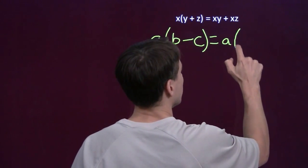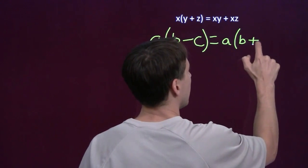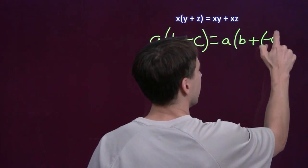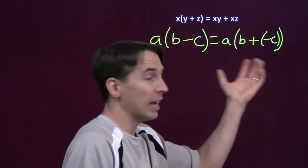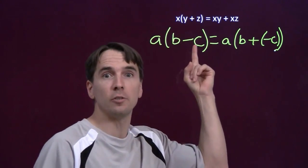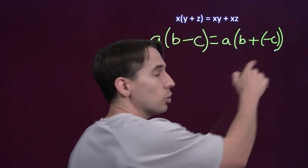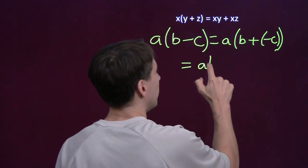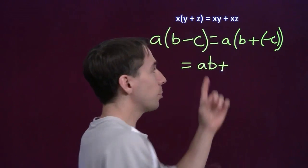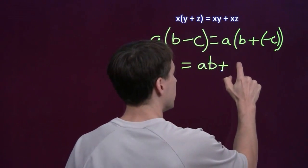I can write this as a times b plus the negation of c. So now over here I have an addition. I have a sum, so I can use the distributive property. I can use the distributive property to expand this as a times b plus the product of a and the negation of c.